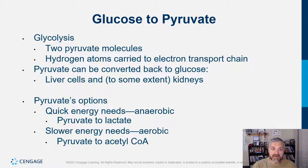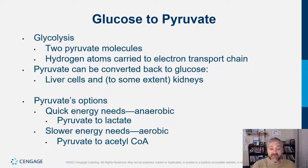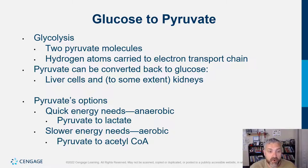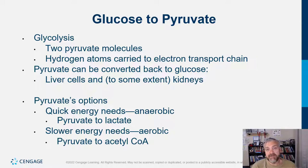Normally pyruvate will go on to become acetyl-CoA — it depends on how much oxygen is available and how much energy you're using. Pyruvate can also be converted back to glucose — your liver cells and some cells in the kidneys can do that. We'll talk about the Cori cycle and how your body recycles these different things.